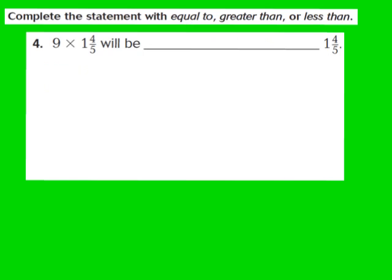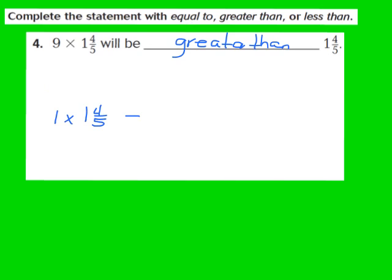We need to think: if our first factor — in this case a 9 — is greater than 1, and 9 is indeed greater than 1, then the product of 9 times 1 and 4 fifths will be greater than the second factor, 1 and 4 fifths. If I multiplied 1 and 4 fifths by 1, the product would equal 1 and 4 fifths — but because my first factor is greater than 1, the product has to be greater than 1 and 4 fifths. So we write down greater than.